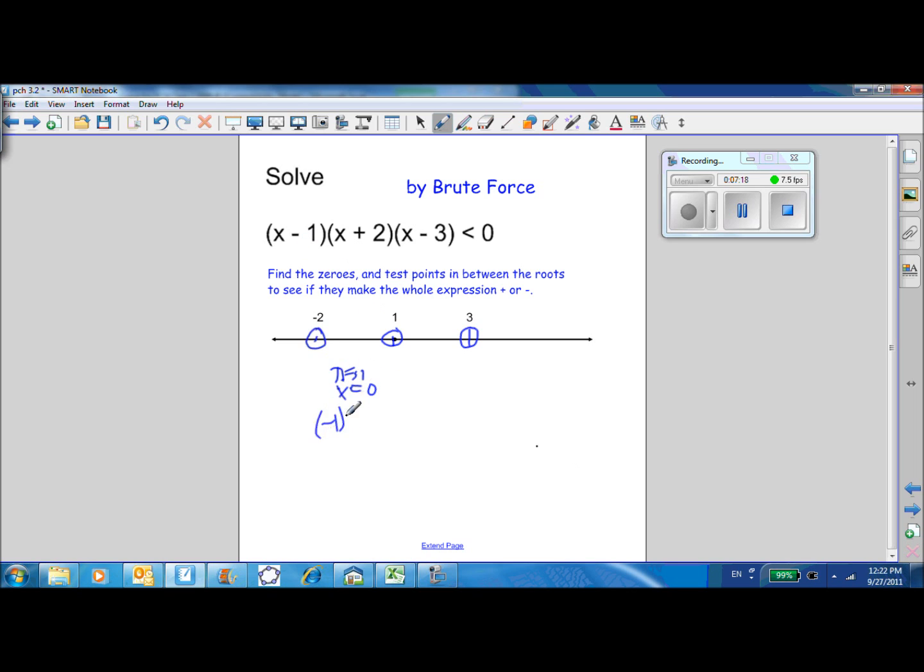You get negative 1 times 2 times negative 3. That's 6. Is that less than zero? No. So that means this doesn't work in here. So let's test x equals 2. So you get 1 times 4 times negative 1. Is negative 4 less than zero? Yes! So that means 2 works. And it convinces all its friends to also work. Everything else connected to this because it's a polynomial function. Once it changes sign, it's going to stay changed until you get to another zero. So all that works in there.